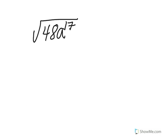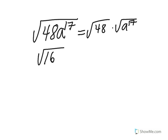Copy the following problem in your notes and try. Remember, we want to separate the variables from the numbers — do the numbers separately, then do the variables. Using the multiplication property of square roots, we separate this into the square root of forty-eight times the square root of a to the seventeenth. For the square root of forty-eight, we find the biggest perfect square that goes into forty-eight — that would be sixteen. So we break it into the square root of sixteen and the square root of three. The square root of sixteen simplifies to four, so our number portion is four root three.